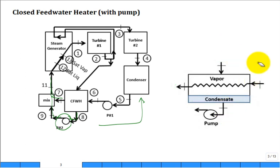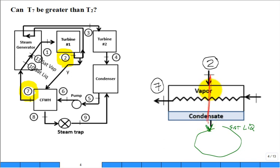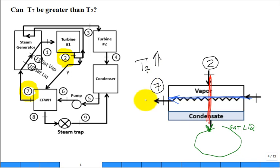Let's ask some questions about this heat exchanger. Forget what the condensate does — just know that saturated liquid comes out of the hot stream at the bottom. The hot stream provides heat to warm the cold stream flowing the other way. The goal is to maximize the temperature at state 7 — the outlet of the tube side — since it's about to go into the steam generator. The question is: can T7 be greater than T2?